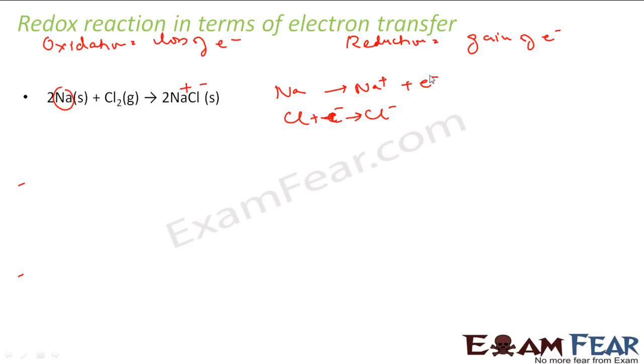So loss of electron is happening here in this case. So sodium is what? Is getting oxidized. This guy is getting oxidized. And chlorine is something which is getting reduced here. So with a new definition where we say oxidation is loss of electron and reduction is gain of electron, we say that sodium is oxidized and chlorine is reduced here.